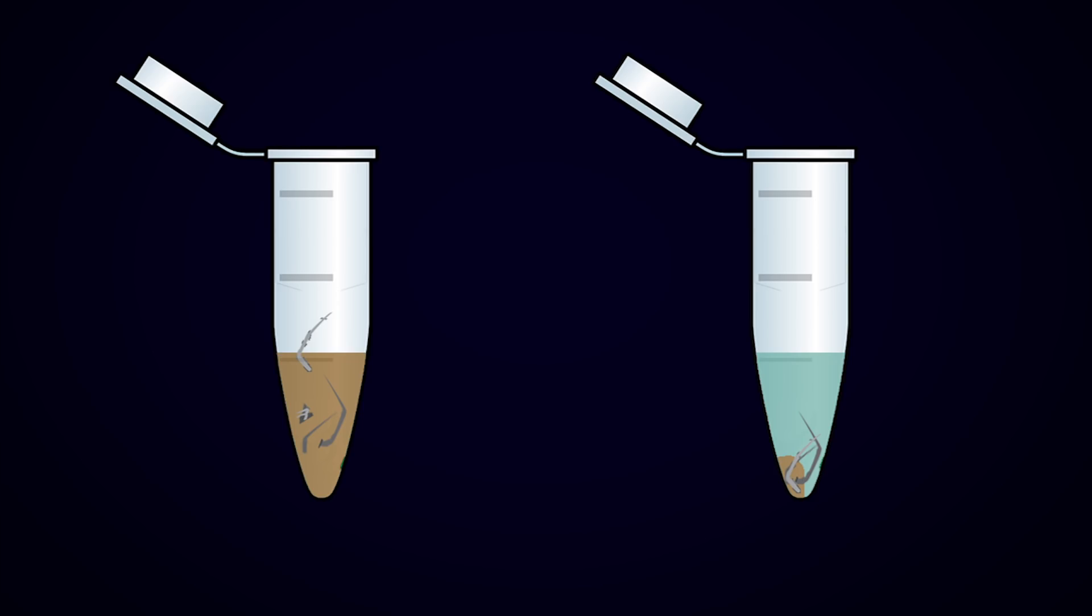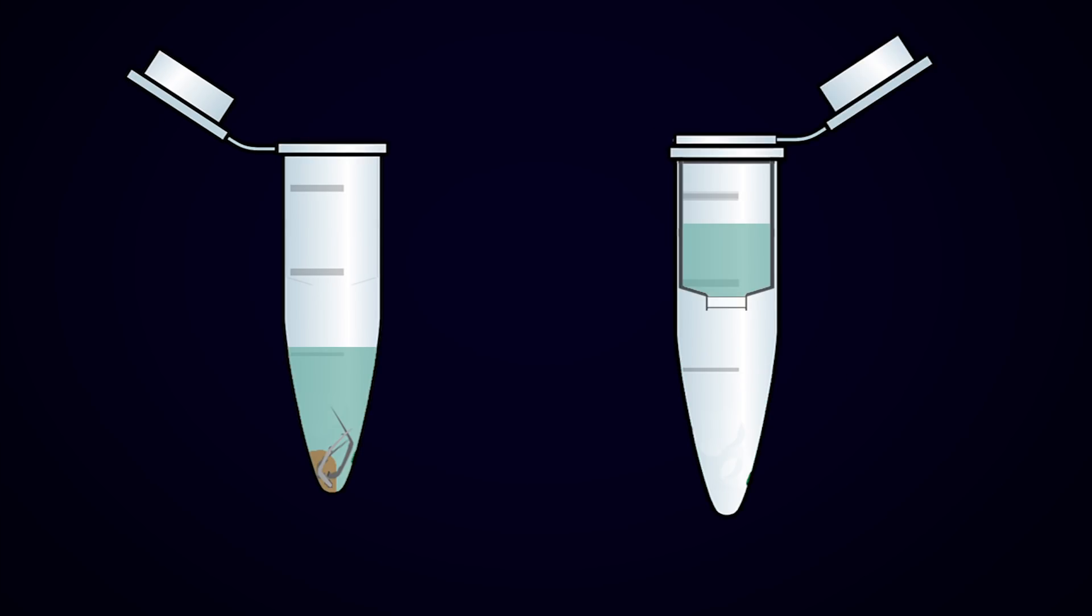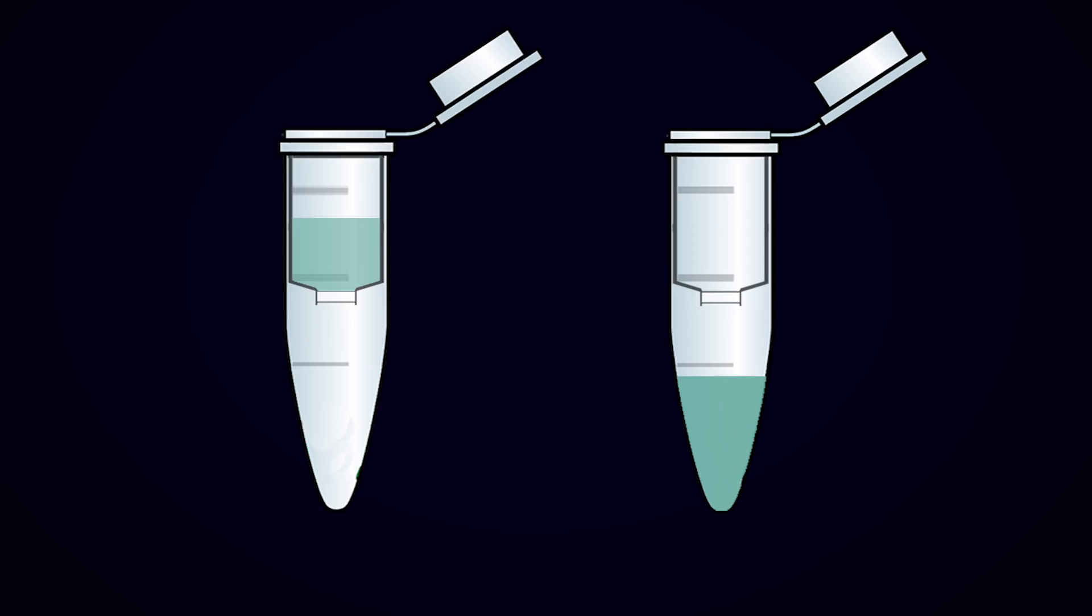This is done using a centrifuge, and all the heavy debris will sink to the bottom. We then take our clean solution and load it into this special tube. It's basically the world's smallest coffee filter, and the filter in this case is either made of silica or a special resin. We load the tube into a larger tube which will act as our collection cup, and then spin it in the centrifuge to pull the liquid through the filter.